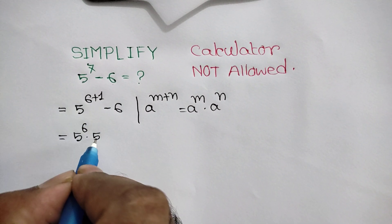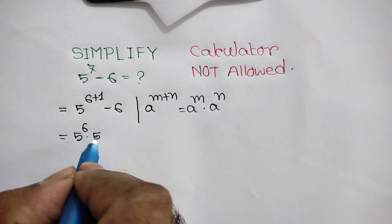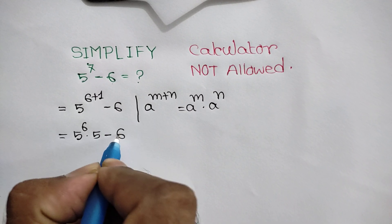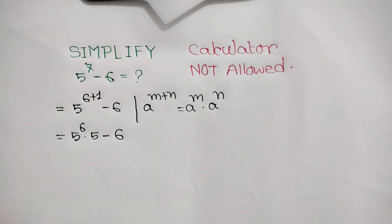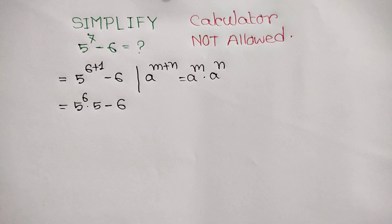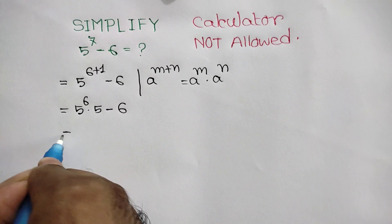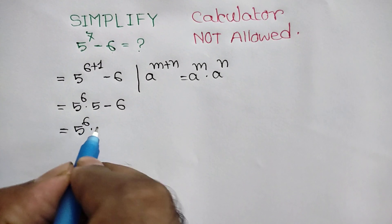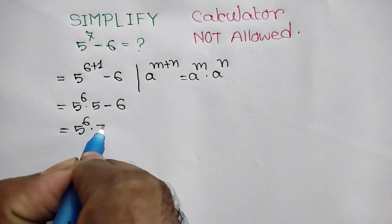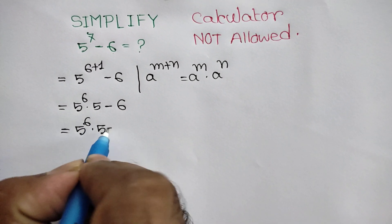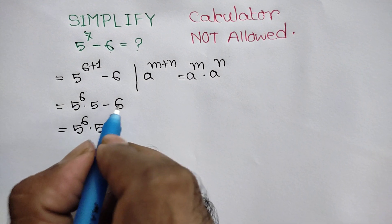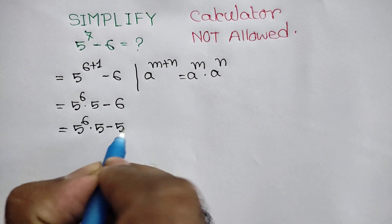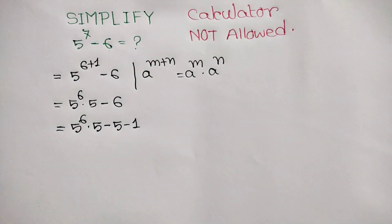5 to the power 1 is the same as 5. So we write 5 to the power 6 times 5, minus 6, which can be written as minus 5 minus 1.